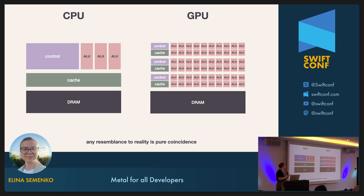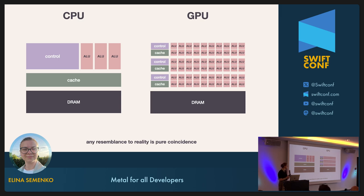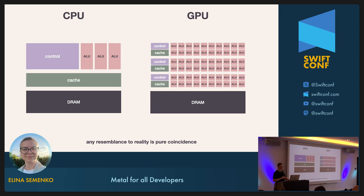The CPU is more multipurpose, so it has fewer arithmetic units and more of other components. The GPU, on the contrary, is very specific — it has tons of logic units that can perform mathematical operations. That's basically the only reason why it's suitable for graphics and all other operations requiring simultaneous calculations or mathematical operations.